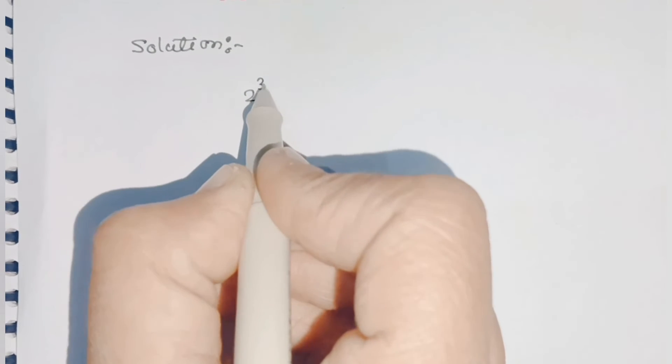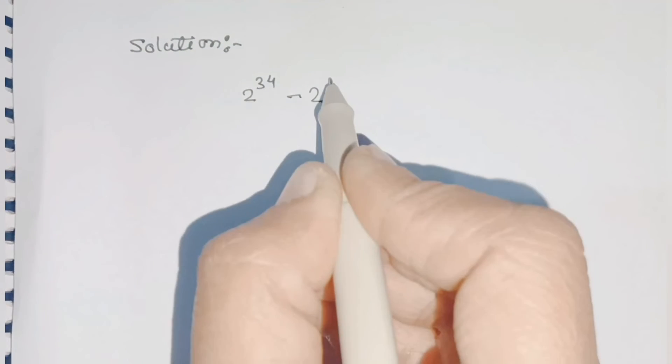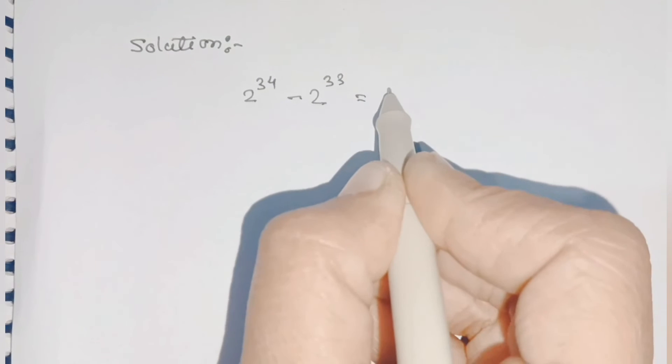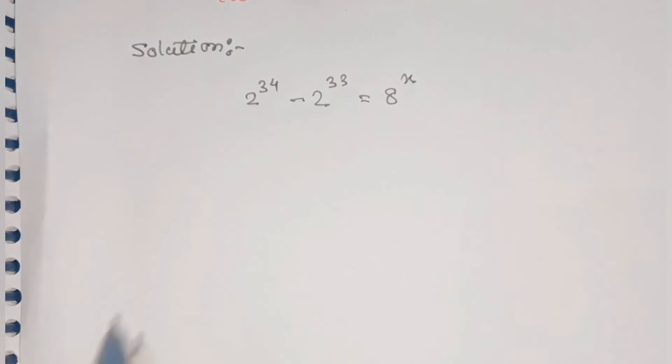Come to the solution. First we'll write the given as it is: 2 raised to 34 minus 2 raised to 33 is equal to 8 raised to x.